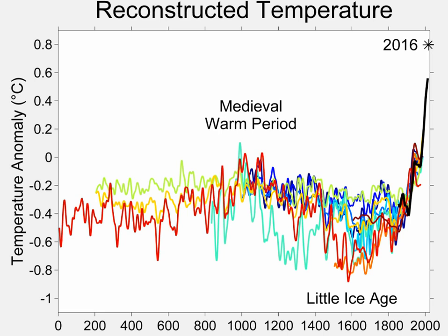In the hockey stick controversy, contrarians have asserted that the medieval warm period was warmer than at present, and have disputed the data and methods of climate reconstructions.